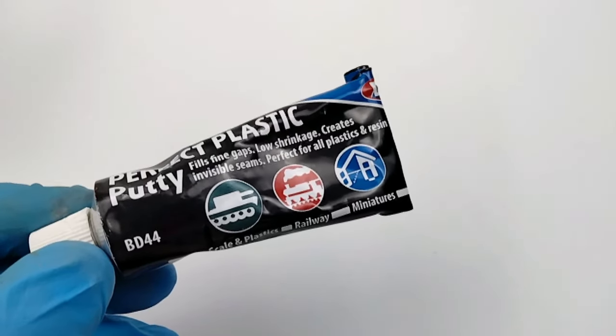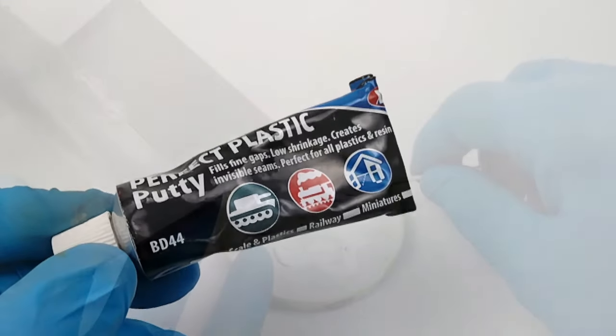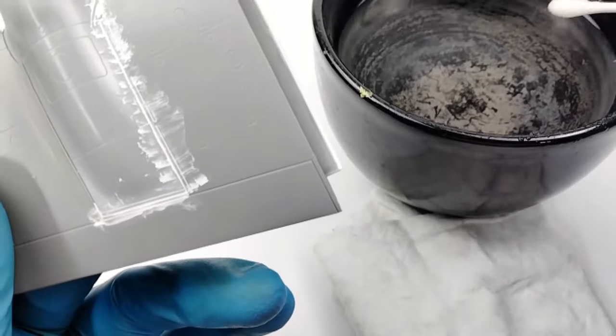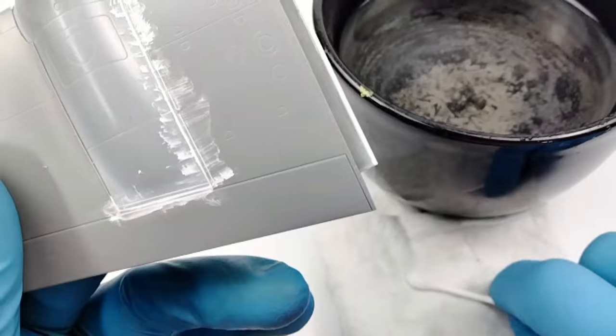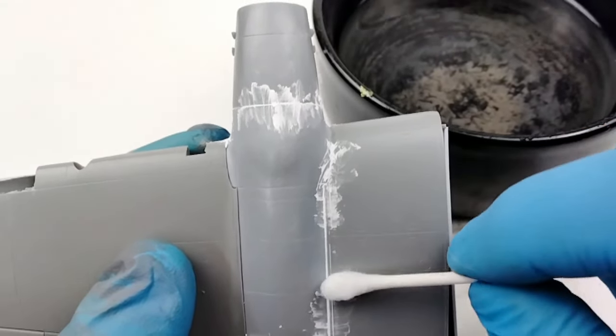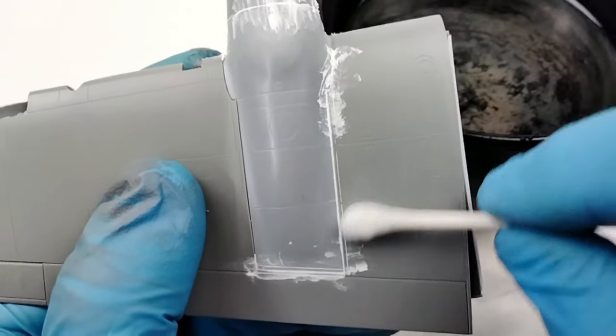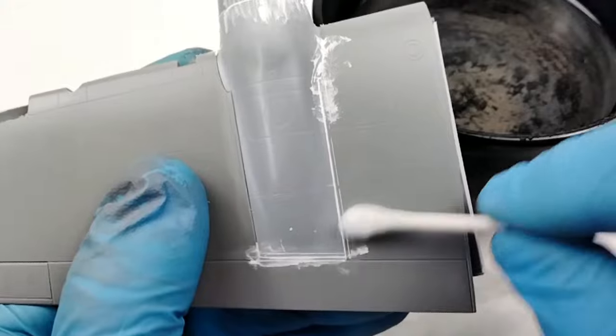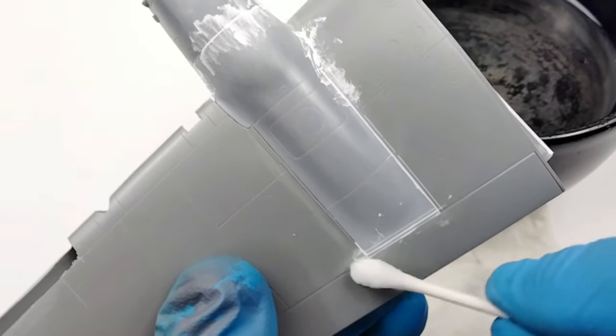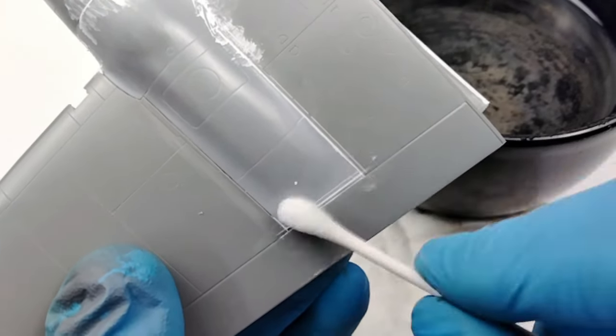My second filler of choice is Perfect Plastic Putty. This is a water-based putty that can be applied directly from the tube, and once dry, can be re-wetted with a damp cotton bud, and then shaped and pressed into the gap further and smoothed out while it is still slightly wet. The great thing with this type of filler is that it doesn't require a whole lot of sanding once dry, and if you need to reshape it, all you have to do is slightly re-wet it, and you can go ahead and reapply it and reshape it into the contours and gaps that you need it to go into.